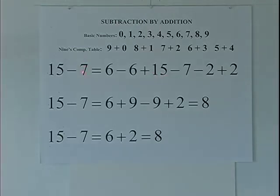I will take the 9's complement of the subtrahend, 7 in this case, which is a 2, and write minus 7 minus 2 plus 2. Minus 2 plus 2 is a 0. And when I add that to minus 7, I get minus 7. So this difference, 15 minus 7, will remain the same.